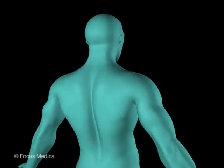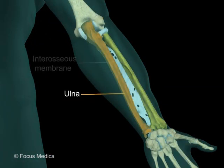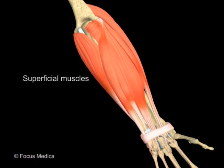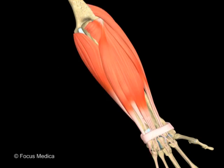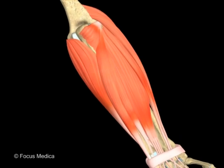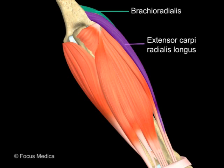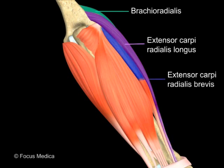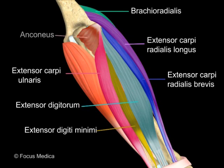The back of the forearm refers to the part of the forearm behind the radius, ulna, and the intervening interosseous membrane. It can be divided into superficial and deep extensor compartments. Muscles in the superficial extensor compartment include the brachioradialis, extensor carpi radialis longus, extensor carpi radialis brevis, extensor digitorum, extensor digiti minimi, extensor carpi ulnaris, and anconeus.